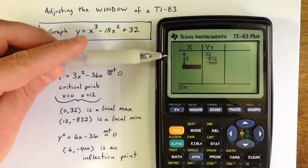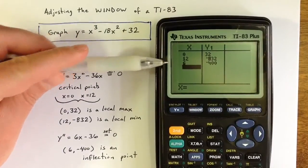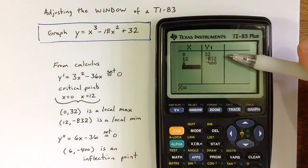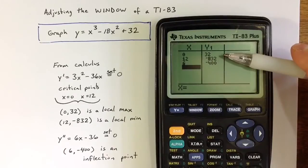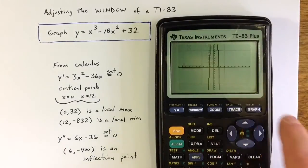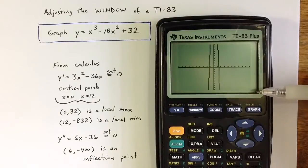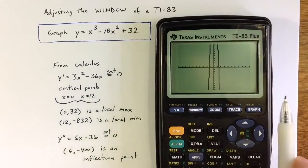So what this tells me is that I'd like my x value range to at least include the numbers from 0 to 12, and I'd like my y value range to include everything from negative 832 up to positive 32. So thinking about what that will do to the graph, I want to see more y values and I also want to see more x values.